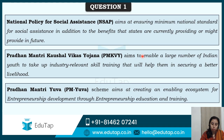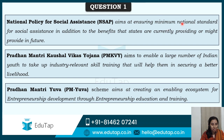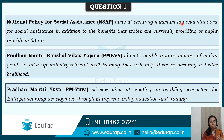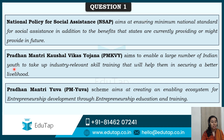The other schemes mentioned: NSAP aims at ensuring minimum national standard for social assistance in addition to existing benefits — it assists poor people. Pradhan Mantri Kaushal Vikas Yojana, from the name itself, is about skill training — to enable a large number of Indian youth to take up industry-relevant skill training for better livelihood and employment opportunities. Pradhan Mantri Yuva Yojana is aimed at enabling an ecosystem for entrepreneurship development through education and training.